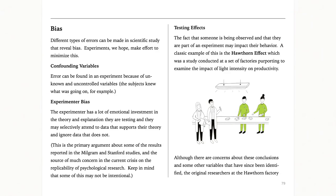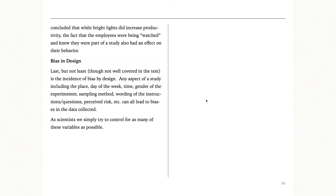We'll also look at bias and confounding variables. Experimental biases include effects of the actual testing environment — what about the environment might be impacting your results? These are all things we take into account before doing our study and try to address. There's also bias in the actual design — does the way we conduct the study tend to lead to particular responses? I'll be showing some examples of that when we meet.